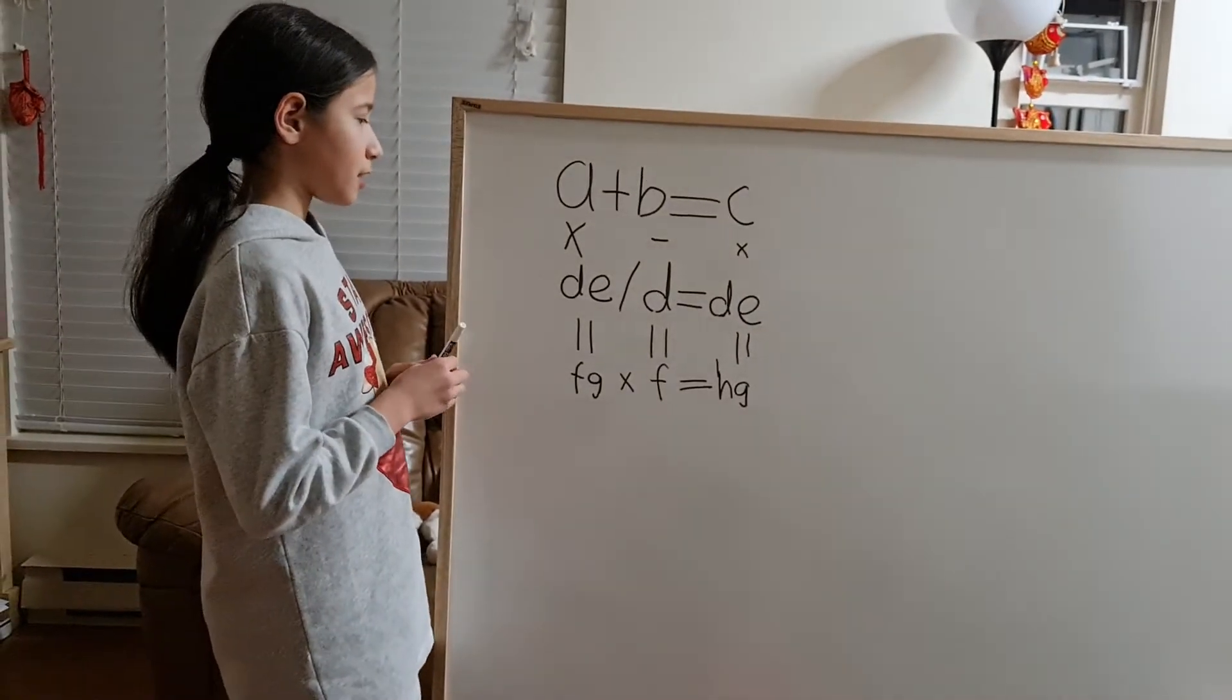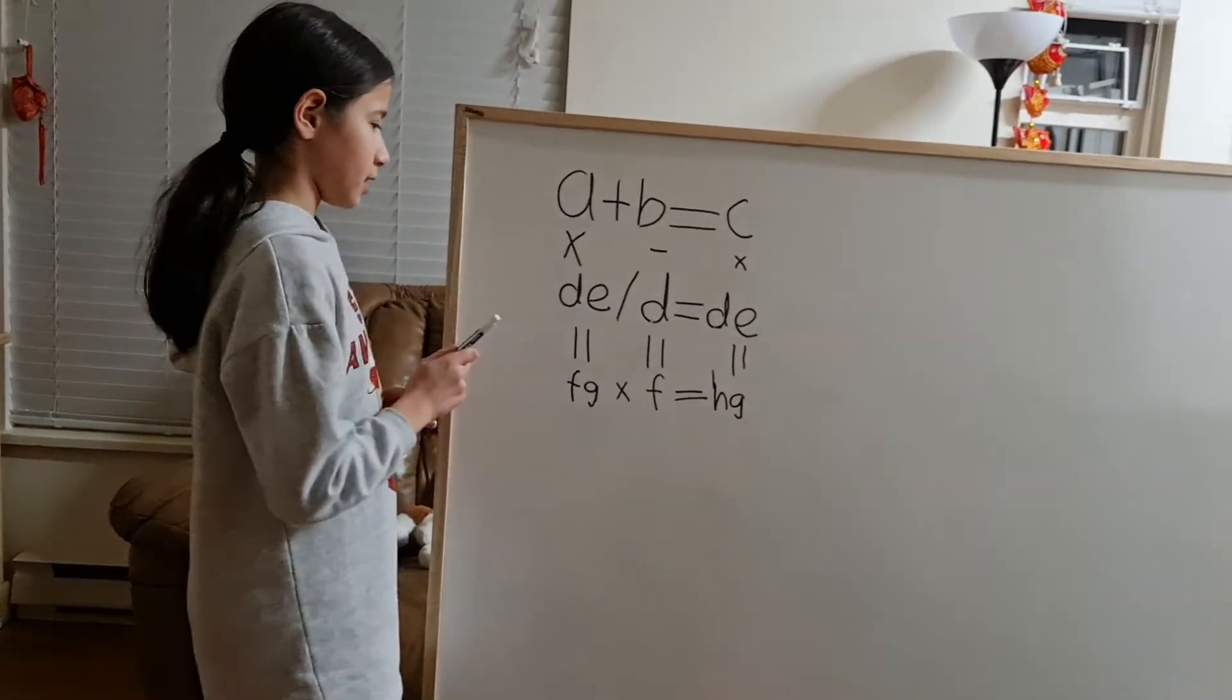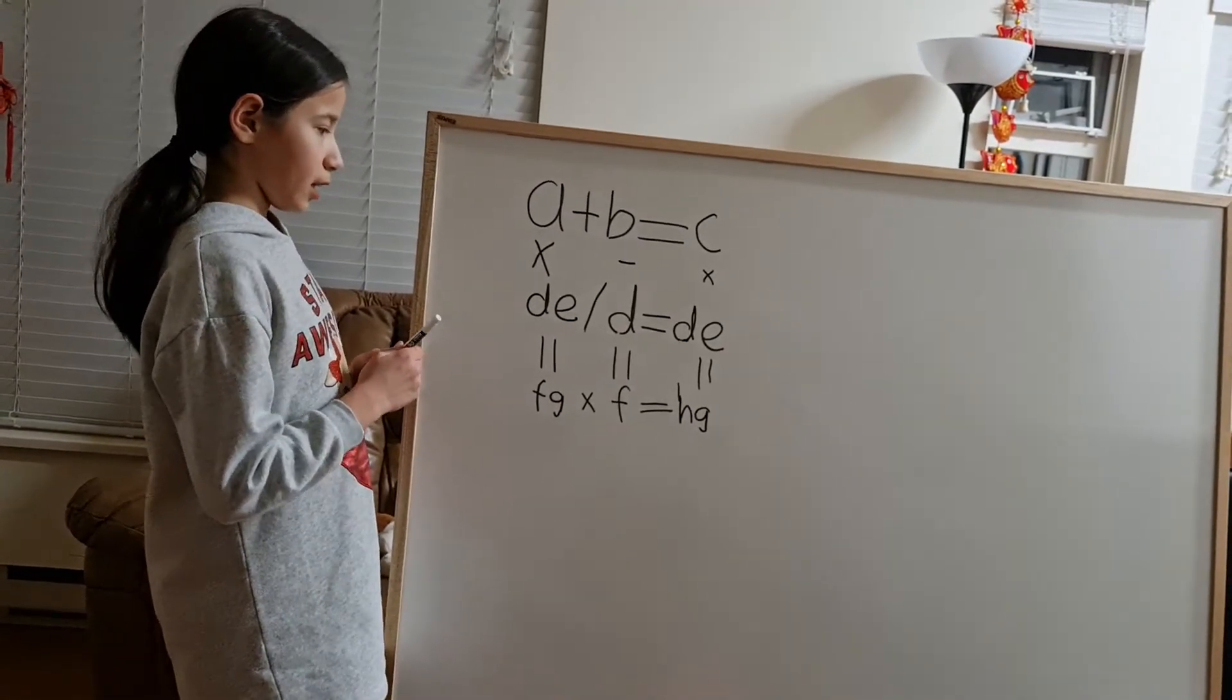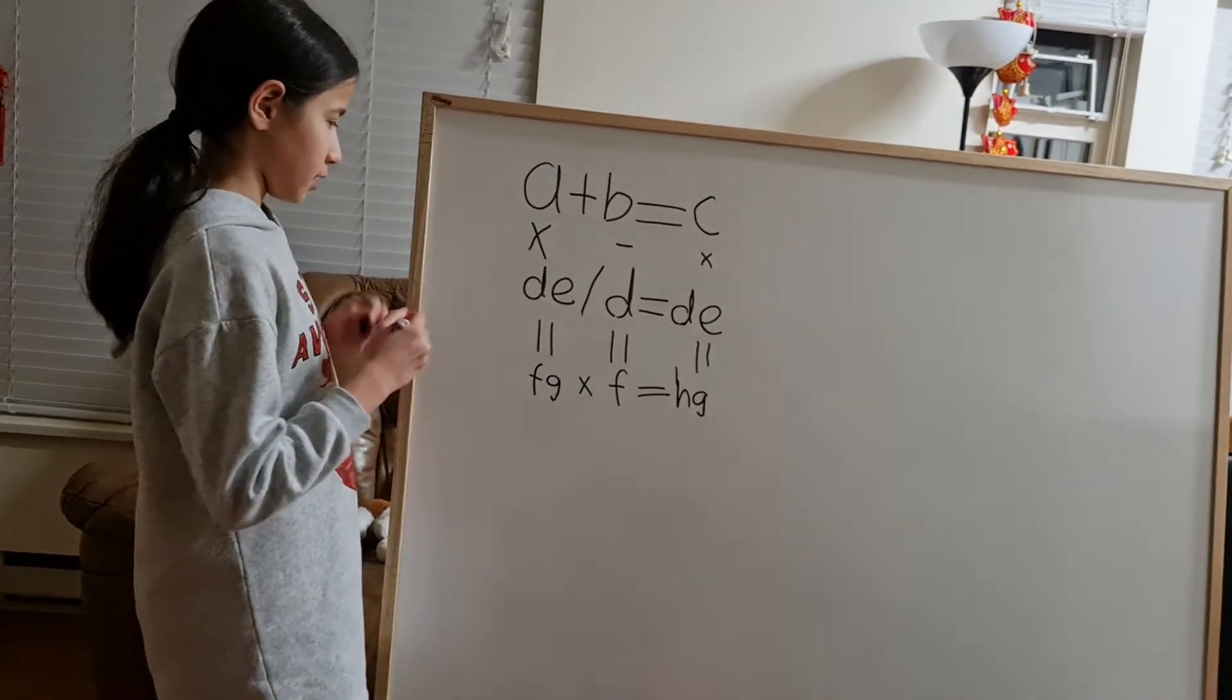Out of the six equations, this one is the easiest. DE divided by D is equal to DE. So it's obvious that D is equal to 1.